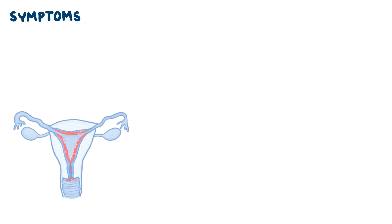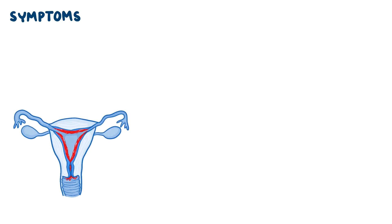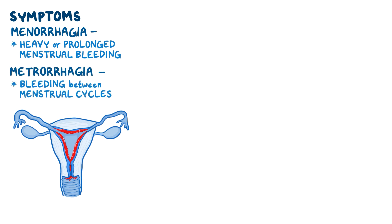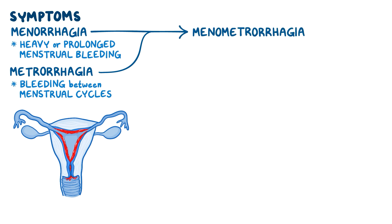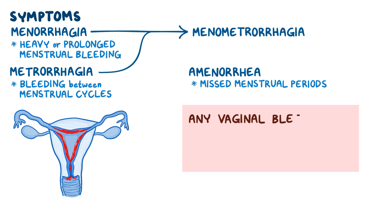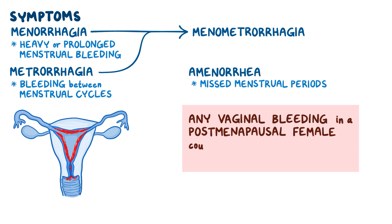The most common symptoms include menorrhagia, which means heavy or prolonged menstrual bleeding, metrorrhagia, which is bleeding between menstrual cycles, or a combination of both, known as menometrorrhagia. In some cases, there could also be amenorrhea, which means missed menstrual periods. Keep in mind that any vaginal bleeding in a postmenopausal female could be a sign of endometrial hyperplasia.